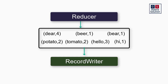Just as data cannot be read directly from the input split without a record reader, it cannot be written directly to the output file without a record writer. The data from the reducer is given to the record writer, which writes the output into an output file back in HDFS. This is how you write a simple MapReduce word count — like a funnel: it starts big and comes down to a final output written inside a file.